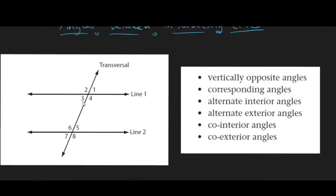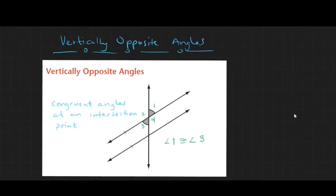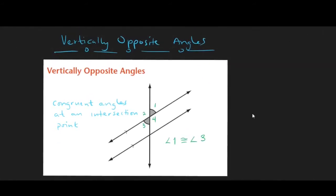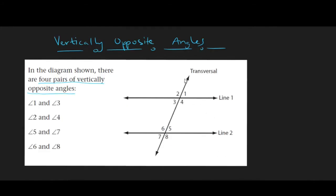We will now look at the angles between intersecting lines. First, we have vertically opposite angles. These angles are congruent and share an intersecting point. In this diagram, angles 1 and 3 share a single point of intersection and are congruent vertically opposite angles. Referring back to our transversal diagram, there are four pairs of vertically opposite angles: 1 and 3, 2 and 4, 5 and 7, and 6 and 8.